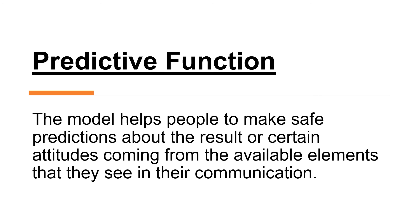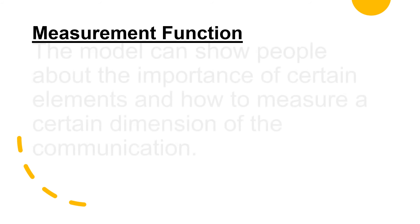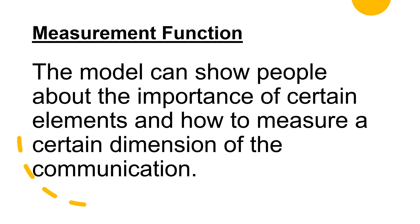Predictive function: the model helps people to make safe predictions about the result or certain attitudes coming from the available elements in their communication. For example, like the earlier scenario about poor communication skills — if someone has poor communication skills, you can already expect that some of the viewers are lost and don't understand the meaning being conveyed. Measurement function: the model can show people about the importance of certain elements and how to measure a certain dimension of communication. Looking back at Berlo's SMCR model, we get to know that under the source aspect, culture, knowledge, and communication skills are very important, as stated in shorter phrases within the model.